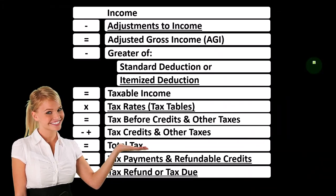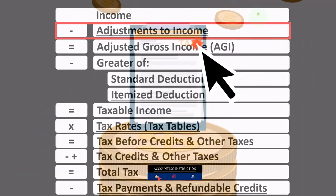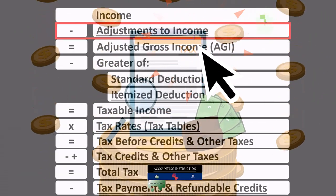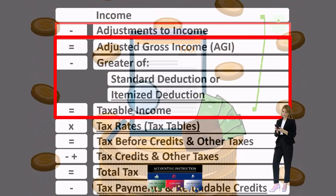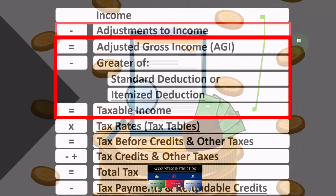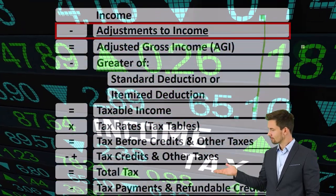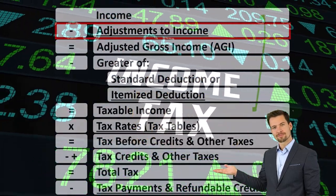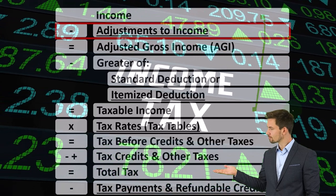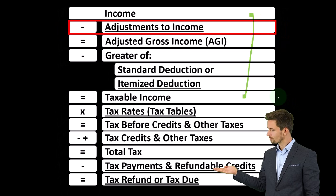Looking at our income tax formula, we're focused on line 2, the adjustments to income. The first half of the income tax formula is essentially an income statement: line 1 is income, minus deductions as the equivalent of expenses, giving us taxable income. We want taxable income to be as low as possible, as opposed to net income where we want it as high as possible.